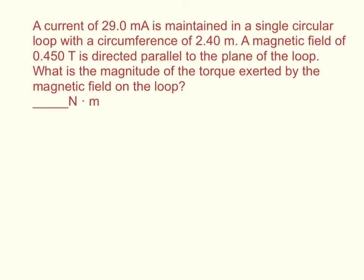A current of 29 milliamps is maintained in a single circular loop with a circumference of 2.4 meters. A magnetic field of 0.45 tesla is directed parallel to the plane of the loop. What is the magnitude of the torque exerted by the magnetic field on the loop?